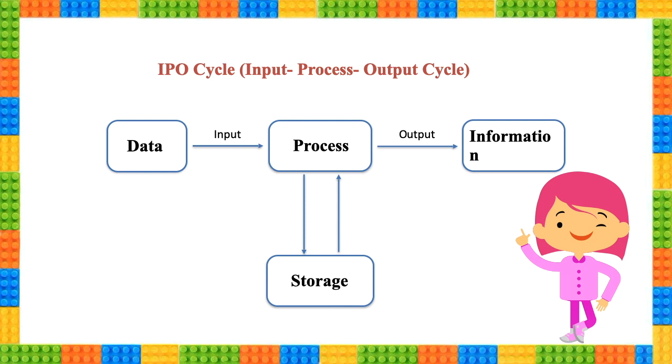The data will be known as input here, and the process will be applied by CPU of computer, that is Central Processing Unit. The process will be stored in the storage device of a computer, and finally after applying the process we will get the information, that is known as the output.